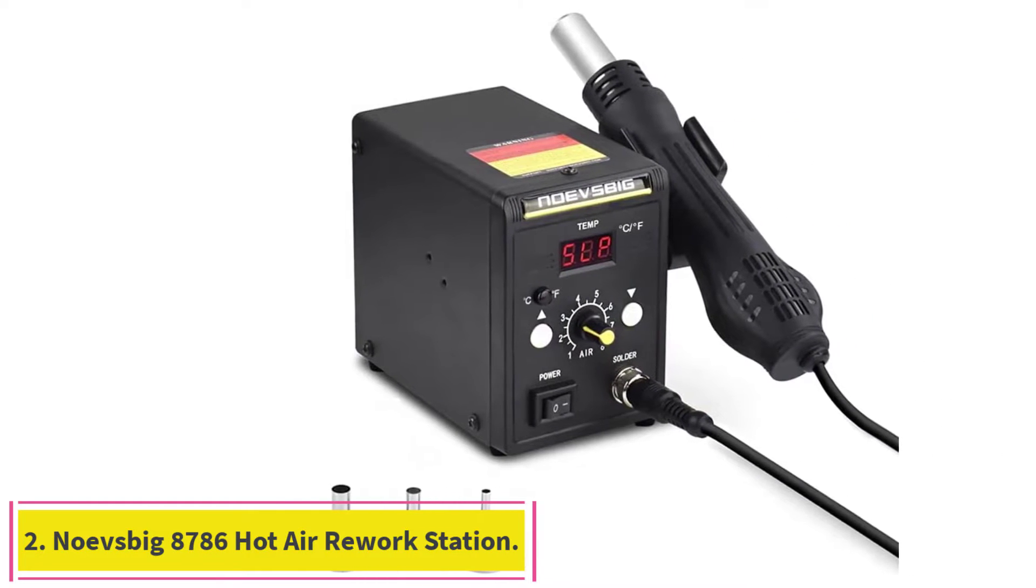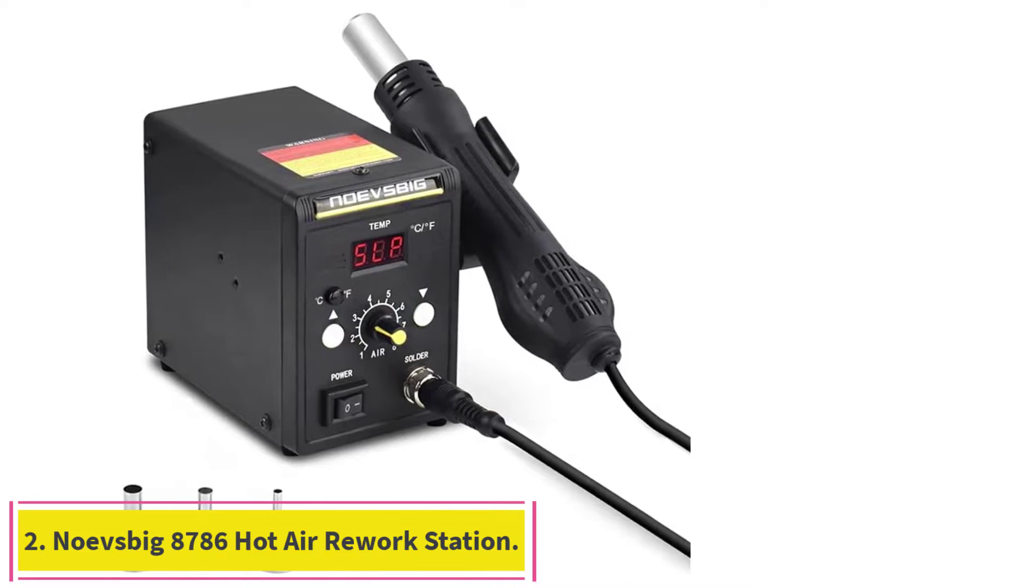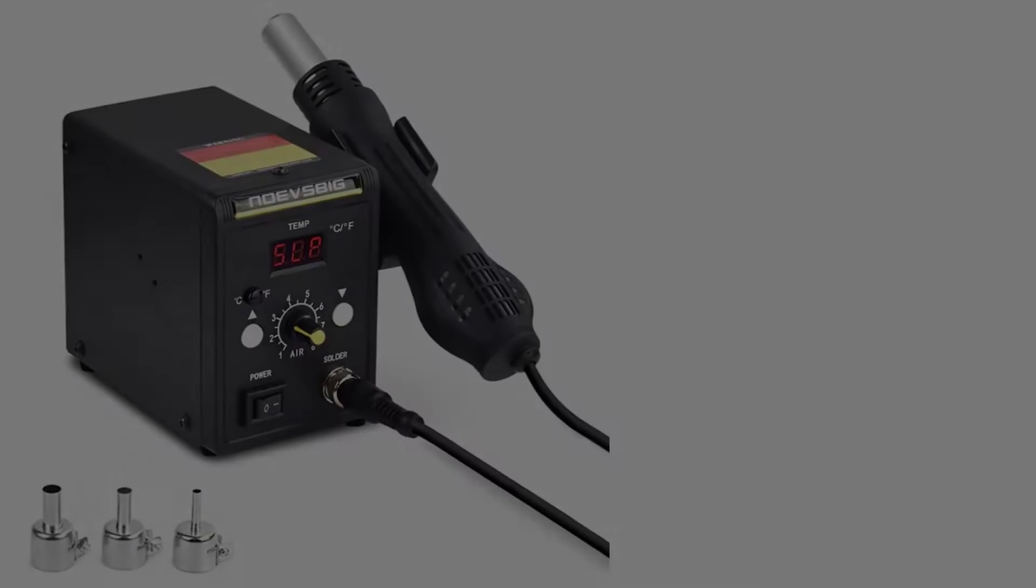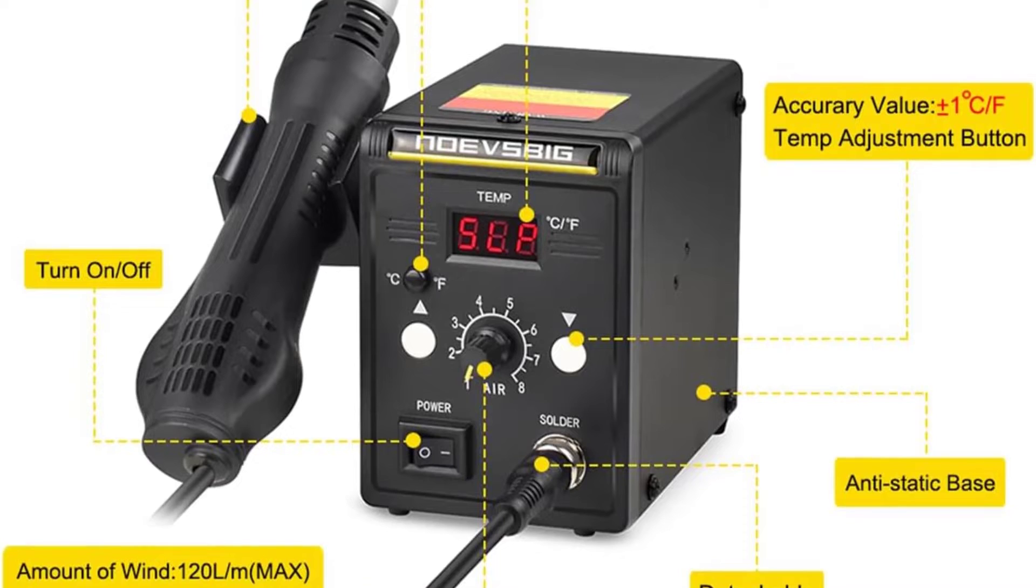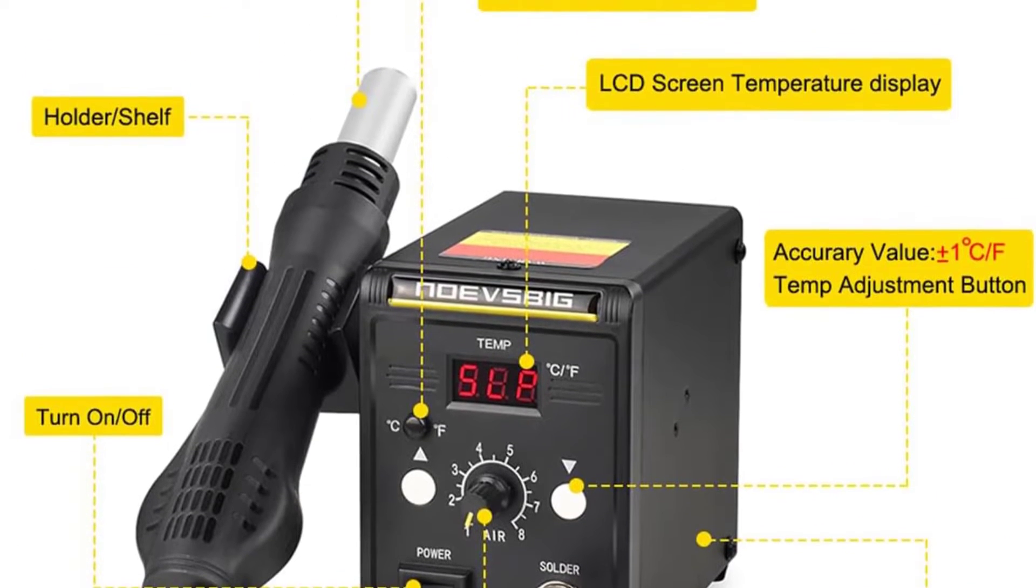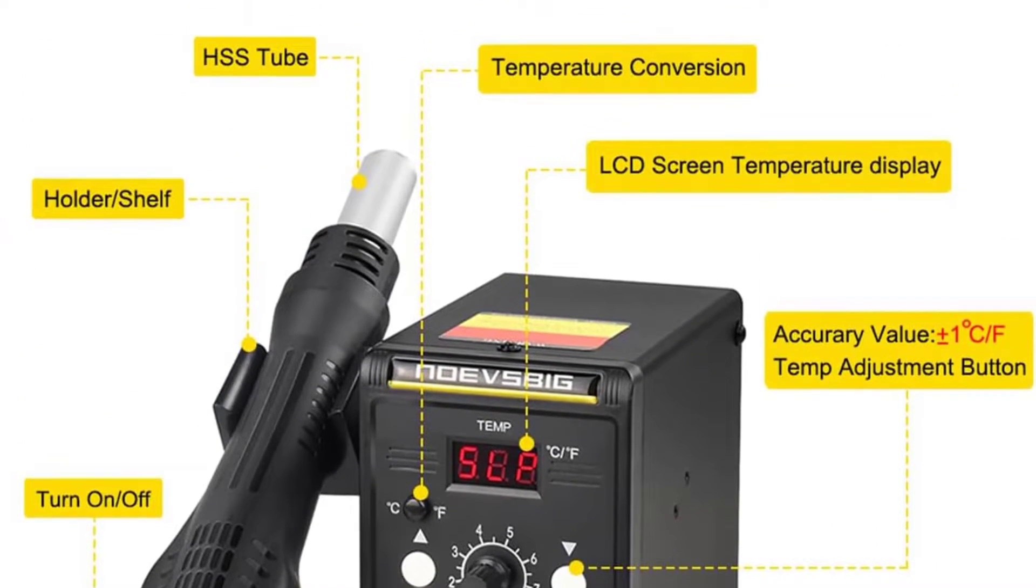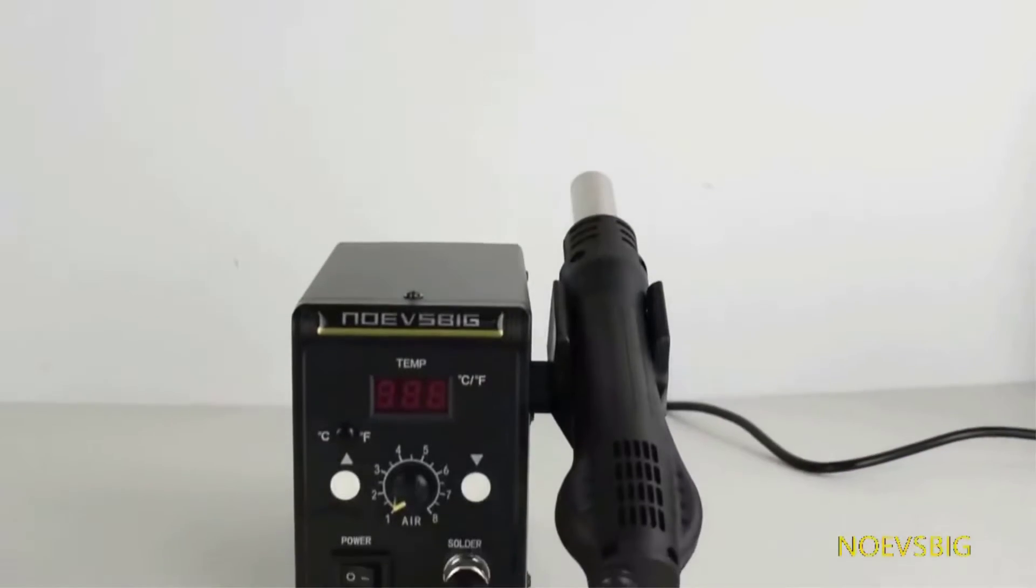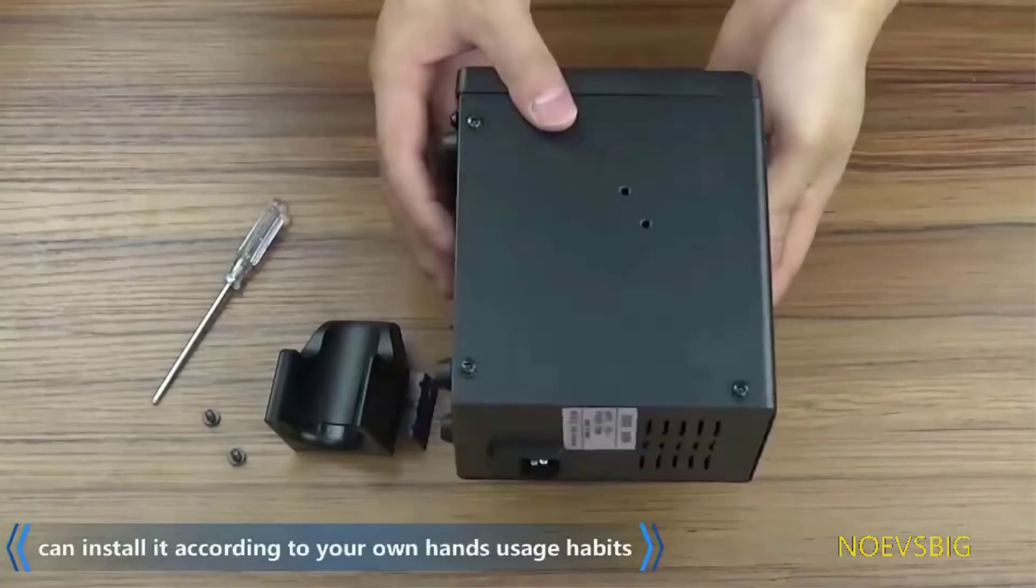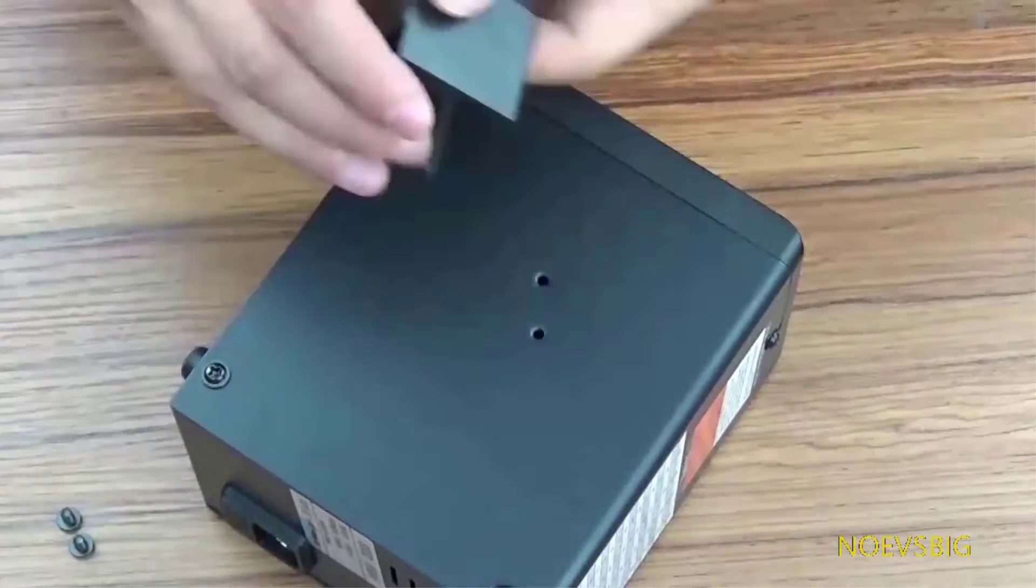Number 2. Nosebig 8786 Hot Air Rework Station. Designed specifically as a solder reworking station, the Nosebig 8786 features a digitally controlled ceramic element that reaches operating temperature in 10 seconds or less. Even though it's relatively small, it gets just as hot as many full-size models.